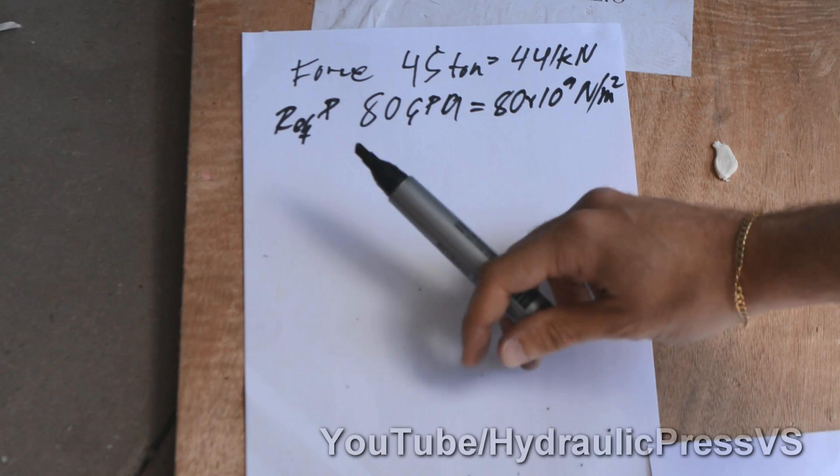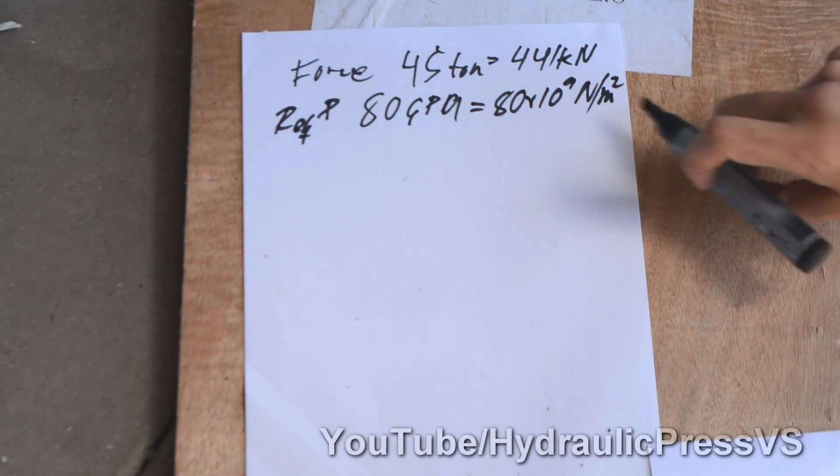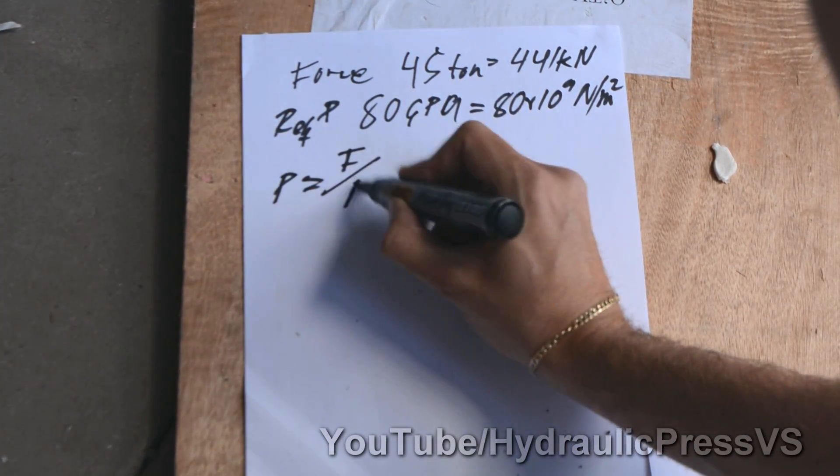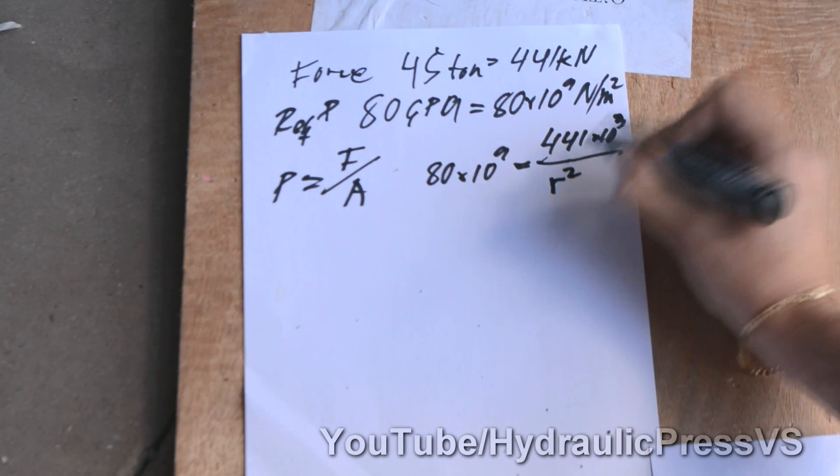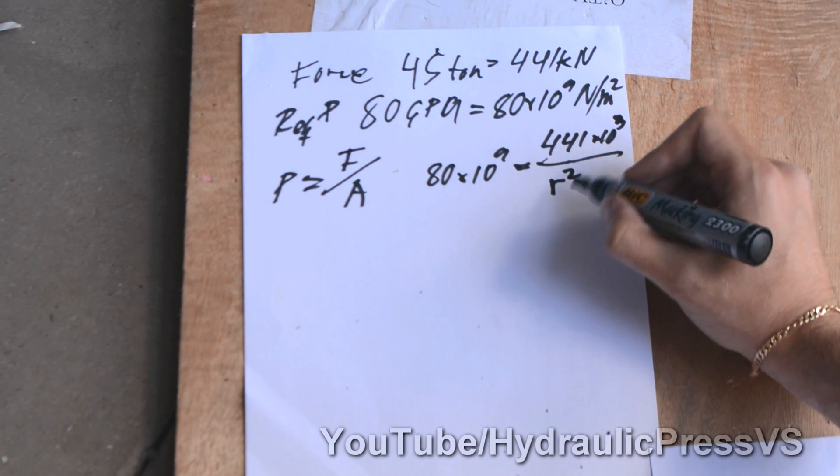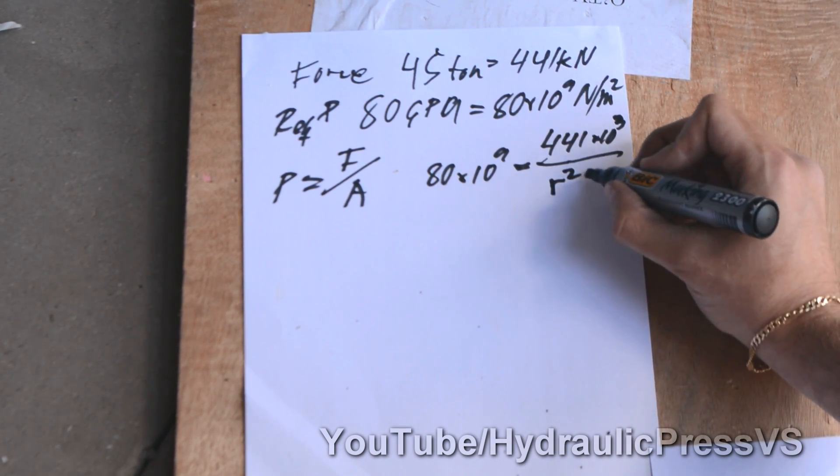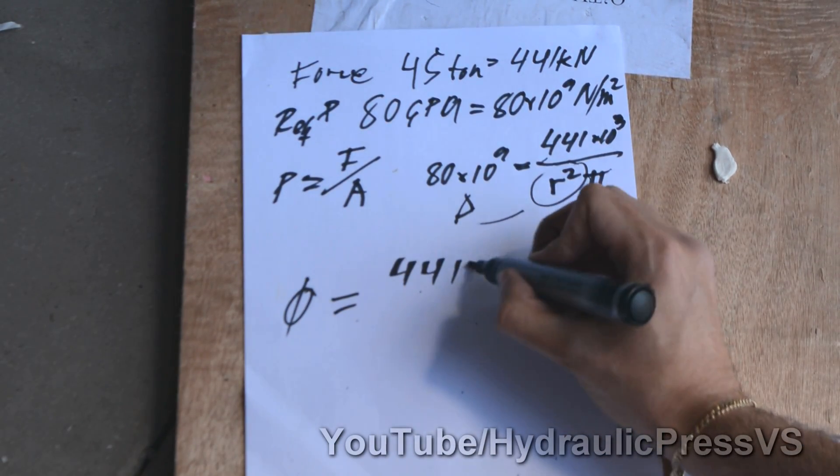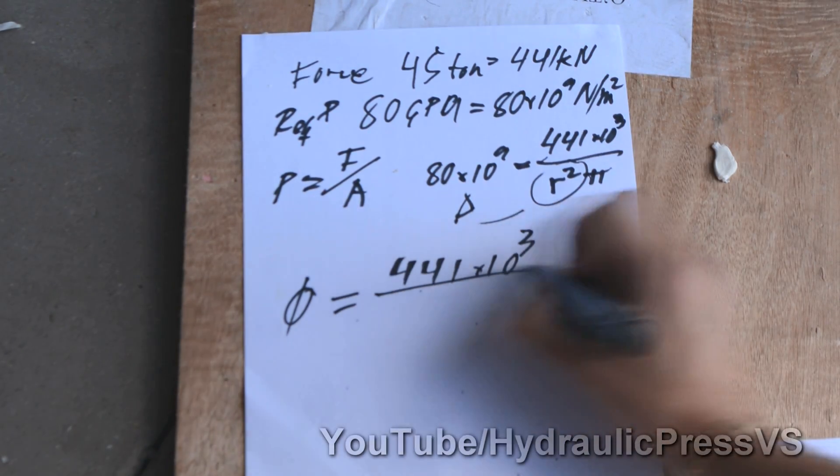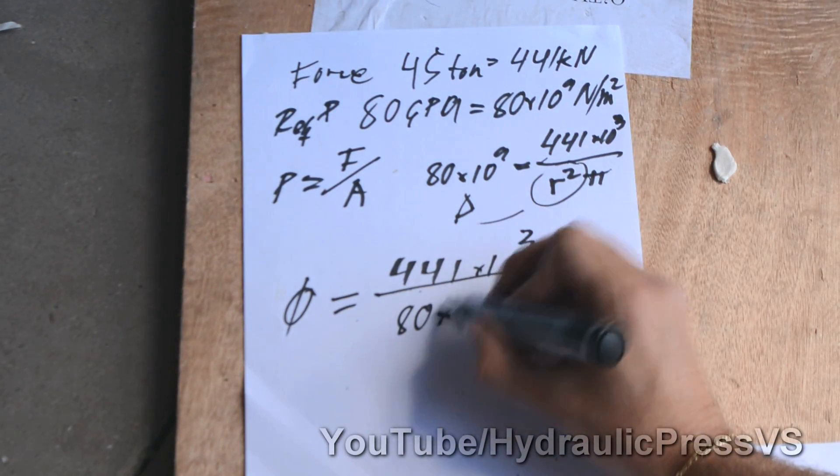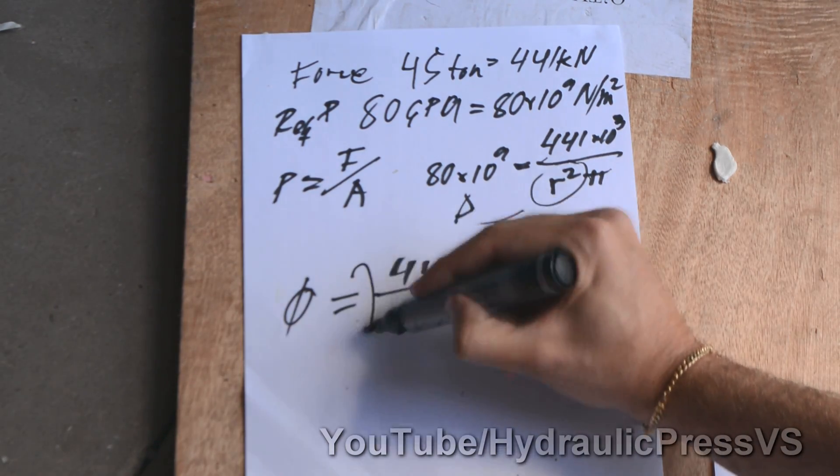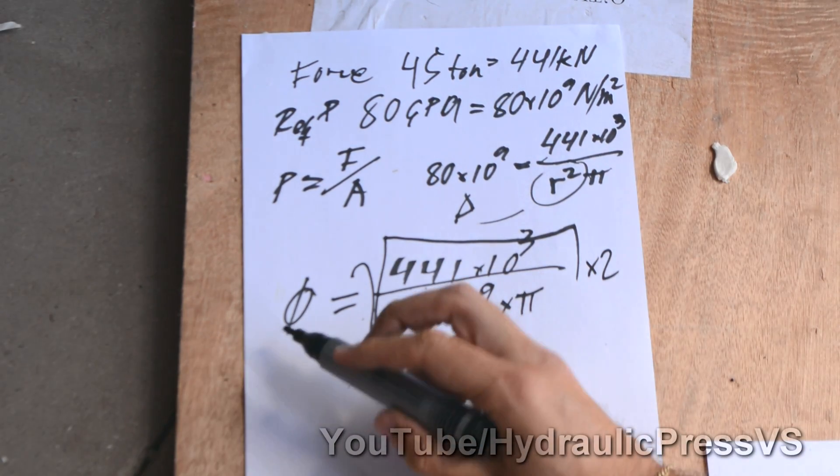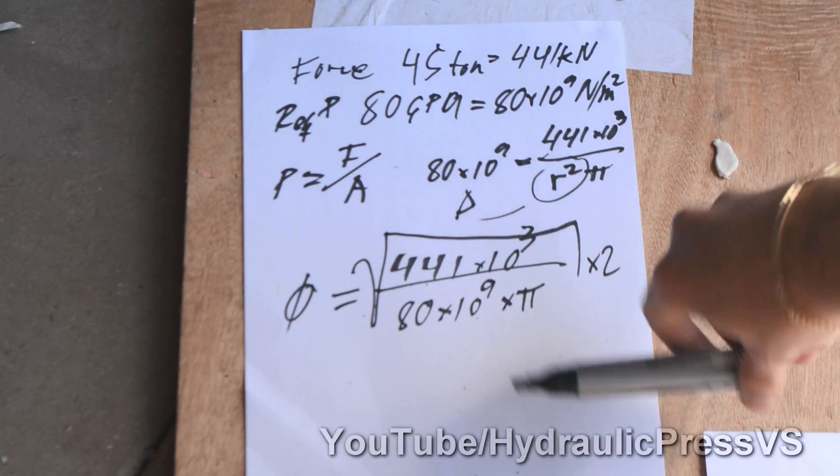So we want 80 GPa which equals 80 times 10 to the power of 9 N per square meter. Okay, so this is the pressure that is required to make this diamond happen. And to get this pressure we know that pressure equals force divided by area, which in this case is pi times radius squared. So the diameter of the cylinder will be 441 times 10 to the power of 3 divided by 80 times 10 to the power of 9, and then we have square root times 2 to get diamond. So we'll get back to this later.